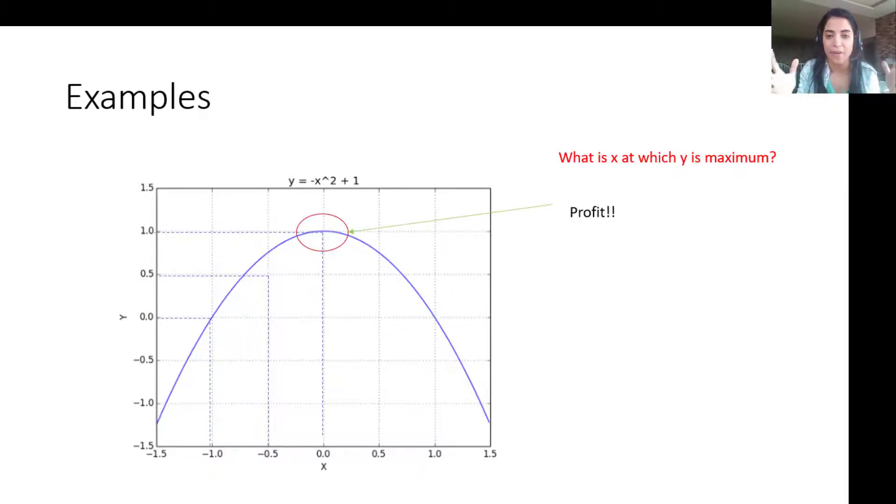Now in this case, this function is the profit because basically what matters for me for any company is to maximize the profit in its business. So this maximum, this function here represents the profit and this is x at which this profit is max.